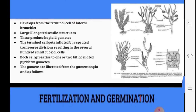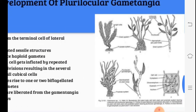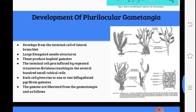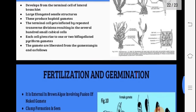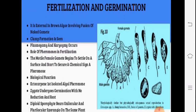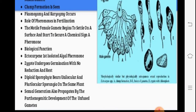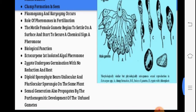In anisogamous types, there are two forms from plurilocular sporangia — some gametes are small, some are larger. They develop elongated structures in the gametangia. In fertilization and germination, the brown algae are found in groups; plasmogamy occurs, gametes are produced and form a zygote. The zygote undergoes germination; reduction division occurs and the diploid sporophyte develops unilocular and plurilocular sporangia on the same plant.